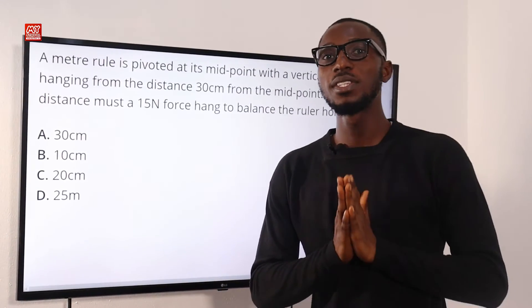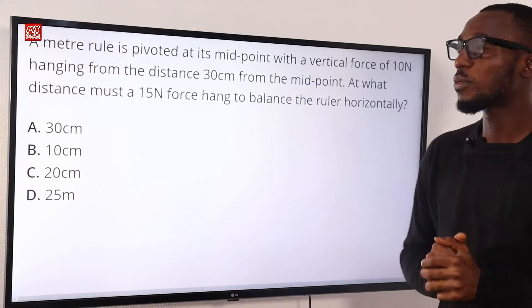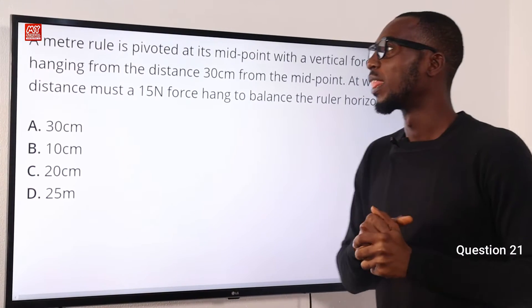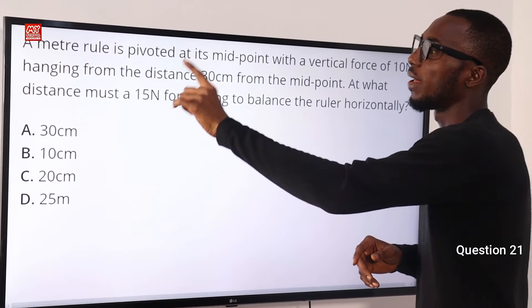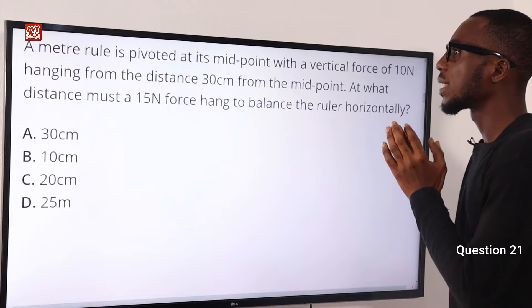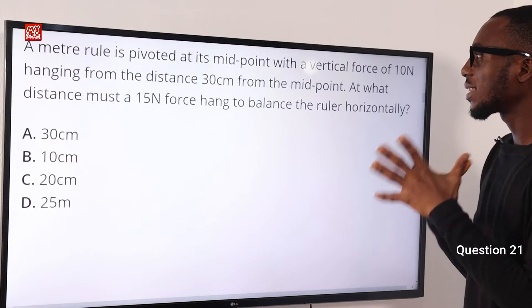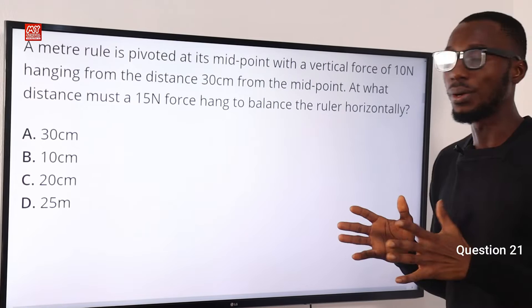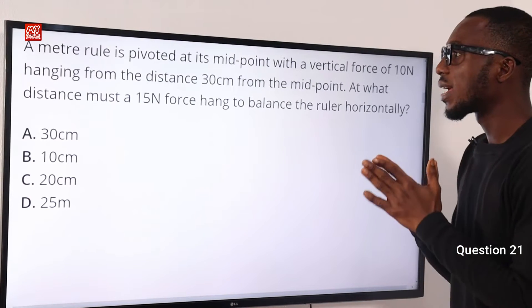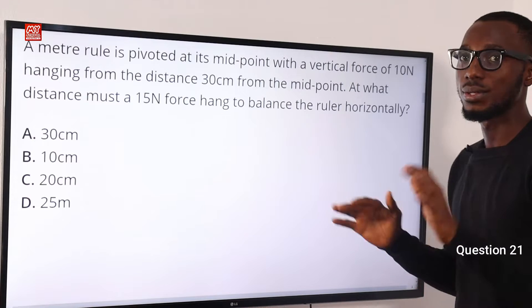Welcome back to my school channel. In this video clip we are solving questions 21 to 35. So we have to solve question 21 now. A meter rule is pivoted at its midpoint with a vertical force of 10 newtons gained from a distance 30 cm from the midpoint. At what distance must a 15 newton force hang to balance the ruler horizontally?